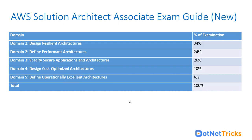The five domains in the new exam guide are: design resilient architectures, define performant architectures, specify secure applications and architectures, design cost-efficient architectures, and define operationally excellent architectures. It is more focused on providing solutions in terms of infrastructure, application, or web services architectures.